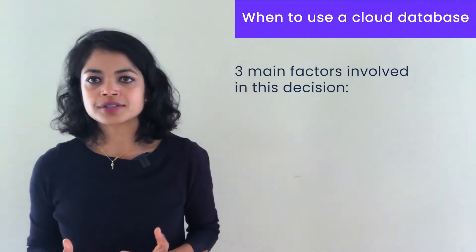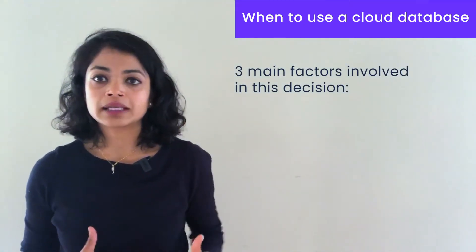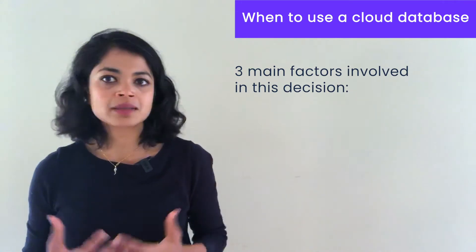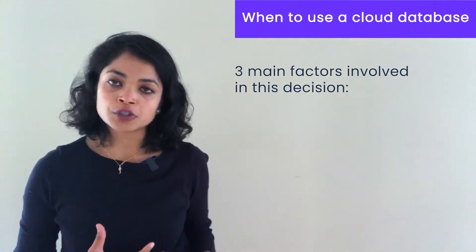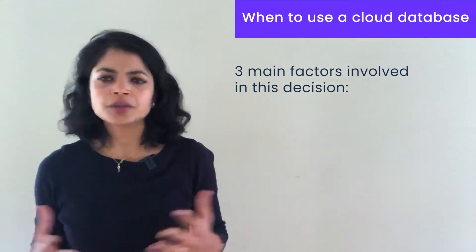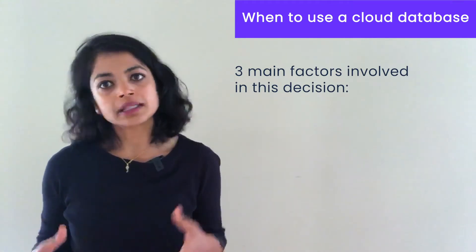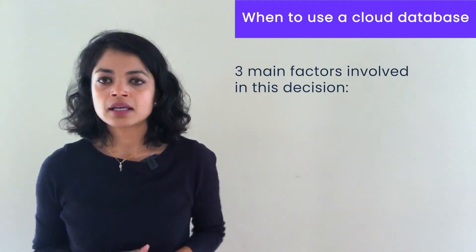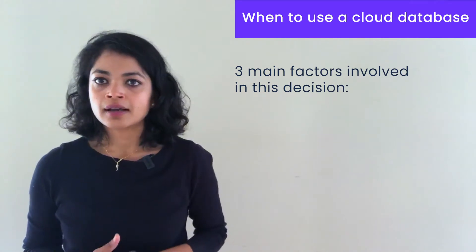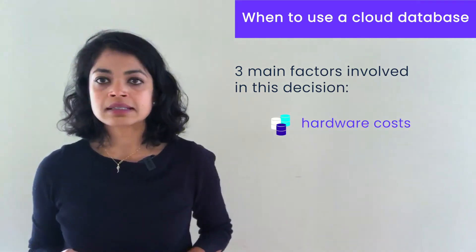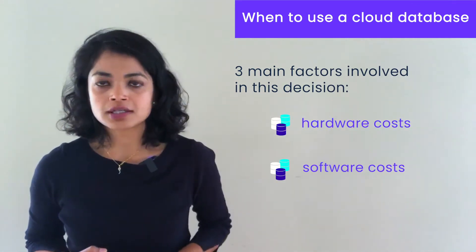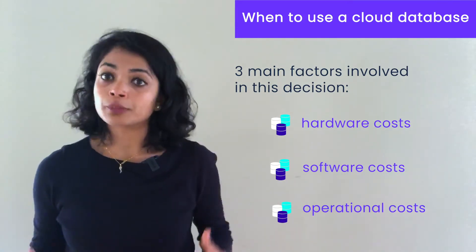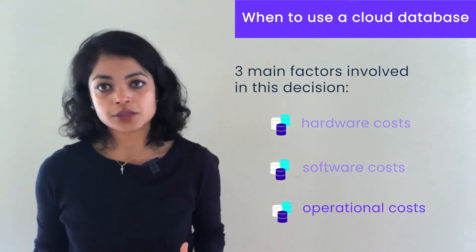There are three main factors to think about when evaluating the cost of owning any piece of software. Sometimes this is called total cost of ownership, or TCO, and it broadly applies to any kind of software. In this case, we'll apply it to databases. The three factors are: one, hardware costs; two, software costs; and three, what we broadly call operational costs. Let's dig a little deeper into each of these.